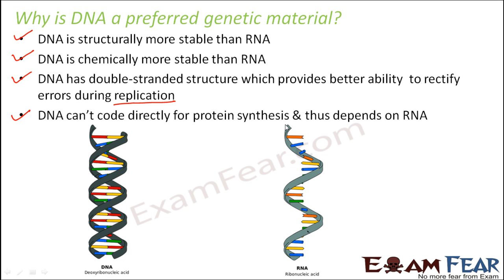DNA cannot code directly for protein synthesis and thus depends on RNA — this is one way where RNA has an edge over DNA. RNA directly codes for proteins; the sequence of bases on RNA directly decides the sequence of amino acids, which form proteins. But DNA cannot directly synthesize proteins; it has to first synthesize RNA, and RNA in turn synthesizes protein. Because of this, DNA is good for storage of genetic information and RNA is good for transmission of genetic information.